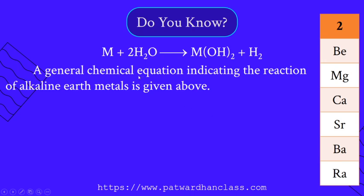The general chemical equation: when an alkaline earth metal reacts with water, it forms the respective hydroxide with the evolution of hydrogen gas.